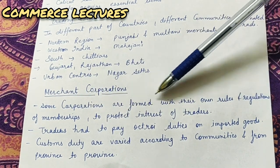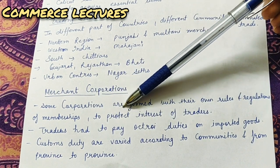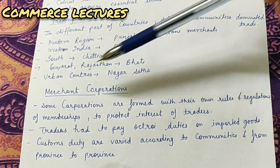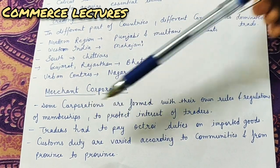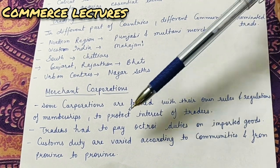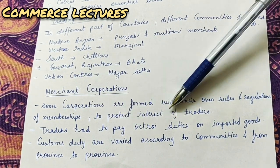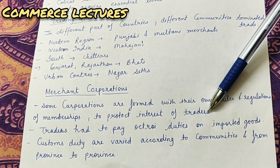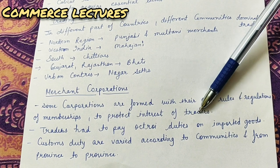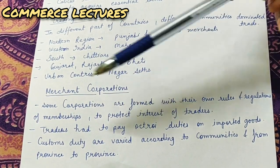Some corporations were formed with their own rules and regulations of membership. In ancient India, some such corporations were formed which had their own rules and regulations. If anyone wanted to become a member, there were their own rules - no outside rule applied to them. The reason for forming Merchant Corporations was to protect the interest of traders, i.e., for their personal benefit, these Merchant Corporations were formed.